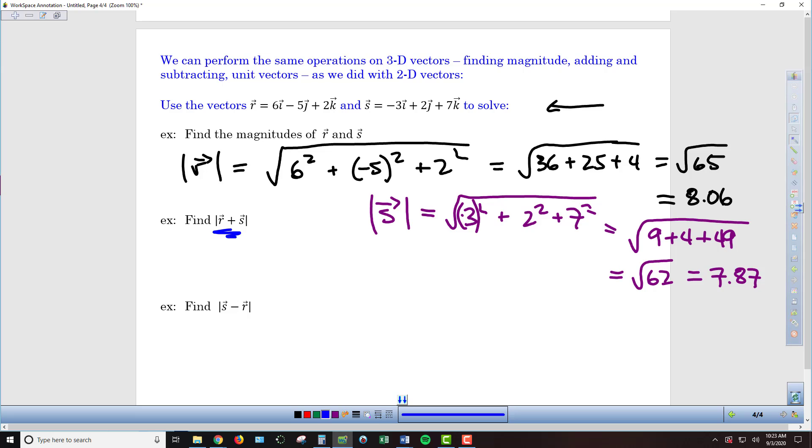If we want to find the magnitude of R plus S, we're just going to take the components of R and the components of S, add them, and then do the same thing. So R plus S in component form is going to be 6 plus negative 3 is 3i, negative 5 plus 2 is minus 3j, and 2 plus 7 gives us 9k. Those are the components we're going to use to find the magnitude.